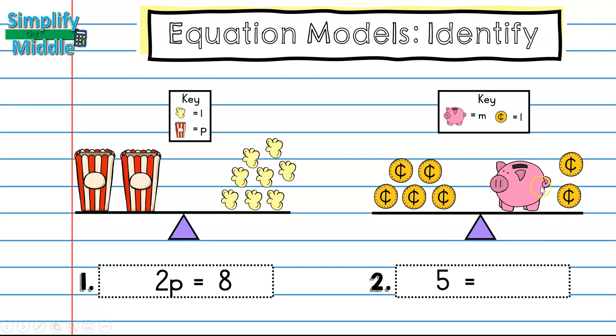Over here, I have a piggy bank, which is my m, and I have 2 coins. So that's my 2 constants. So that's going to be m plus 2. So my equation for this scale is 5 equals m plus 2.